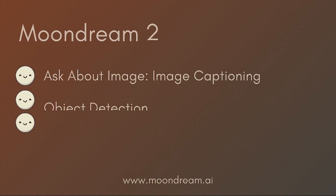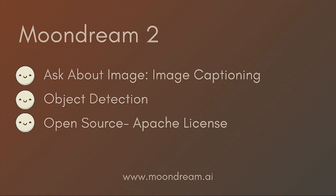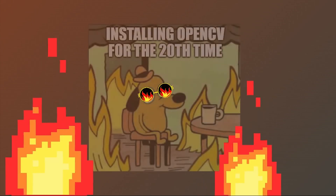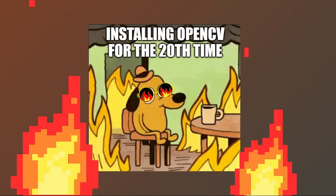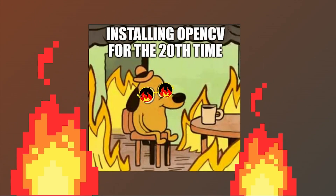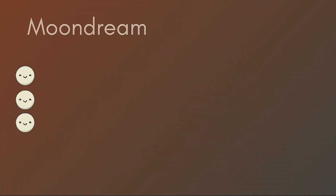Say hello to Moondream. It's not your typical sci-fi gadget — it's a super flexible VLM that can do all sorts of cool things with images. Need to answer questions about a picture, spot and label objects with neat little boxes, or generate captions that describe what's in the frame? Moondream's got you covered. Gone are the days of building OpenCV from scratch on your crisis of a dual-booted PC. Think of Moondream as your AI-powered Swiss Army knife for vision tasks.